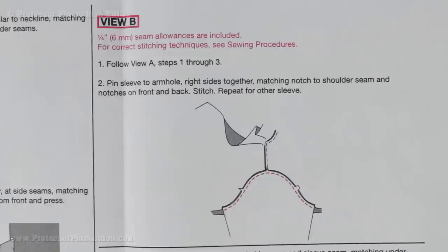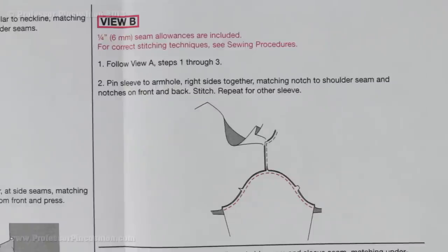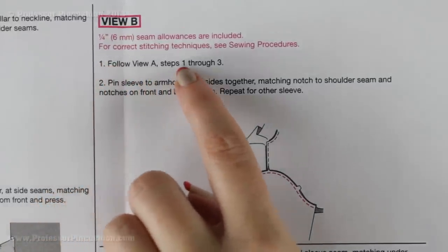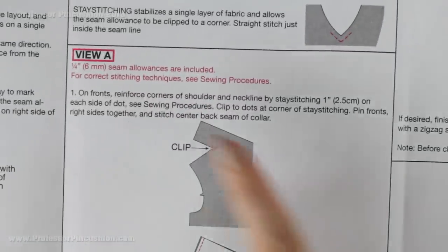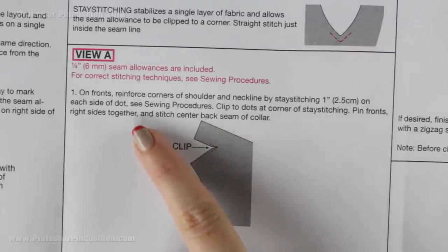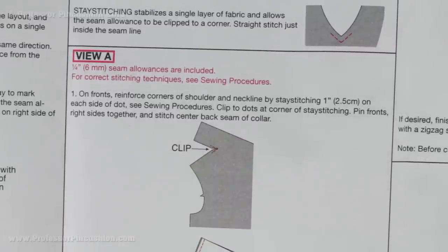I want to show you one more variation with my quick sew pattern directions, which has a similar setup. This one also has multiple views in one set of directions — I am looking at view B and there is also a view A. Step one says to follow view A steps one through three. So view A and view B share some steps. In this case I am going to have to go find view A and do steps one through three even if I am doing view B. Once I complete that, I can go back to step two for view B after I finish step three of view A.